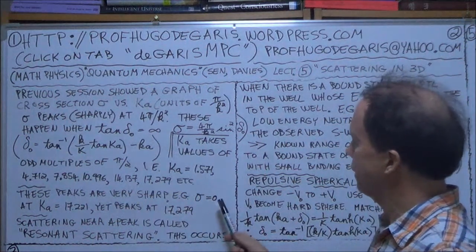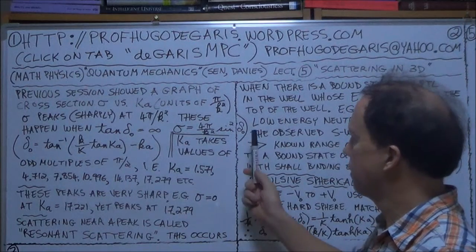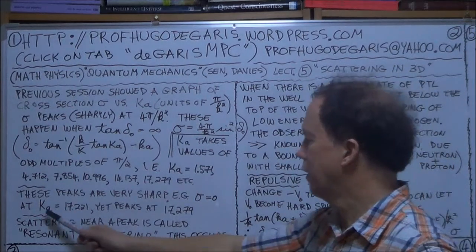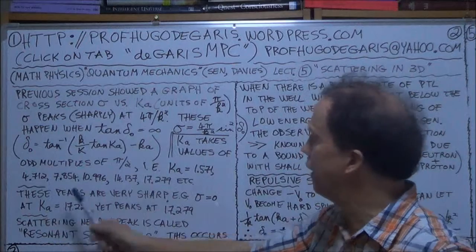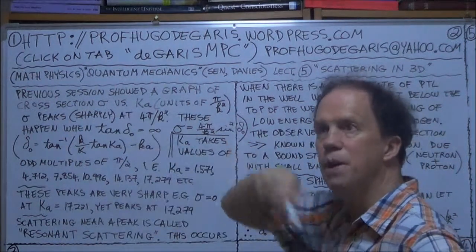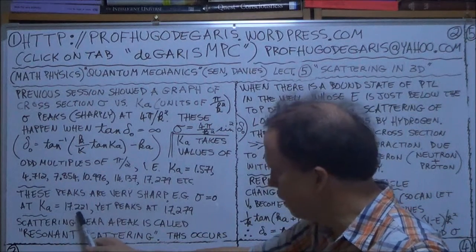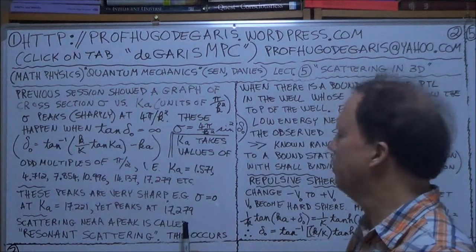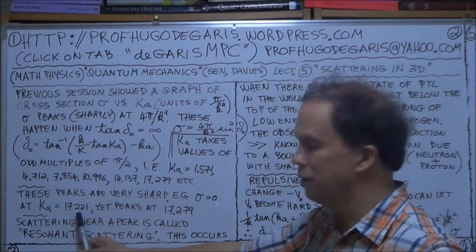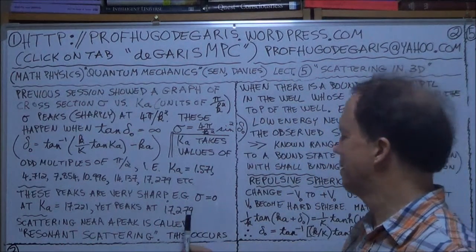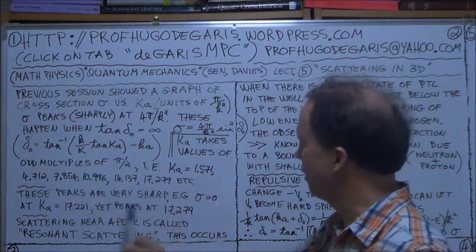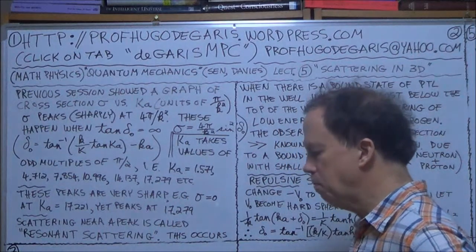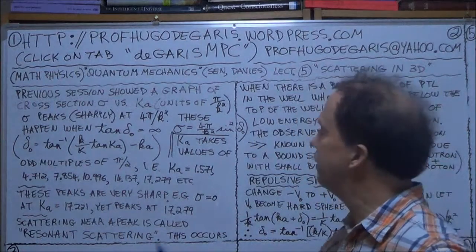And they are very sharp. You can calculate the delta naught from this formula for varying values of Ka. There are two numbers here, two values for big Ka that show you how sharp this peaking effect is. Like, if big Ka is 17.221, you have a zero. There's just no scattering at all. But just a very small amount, a change in the value of Ka, from 17.221 to 17.279, so it's 0.05 difference, and you go from zero to a peak. So it's a very sharply defined increase in the scattering, in your cross-section.